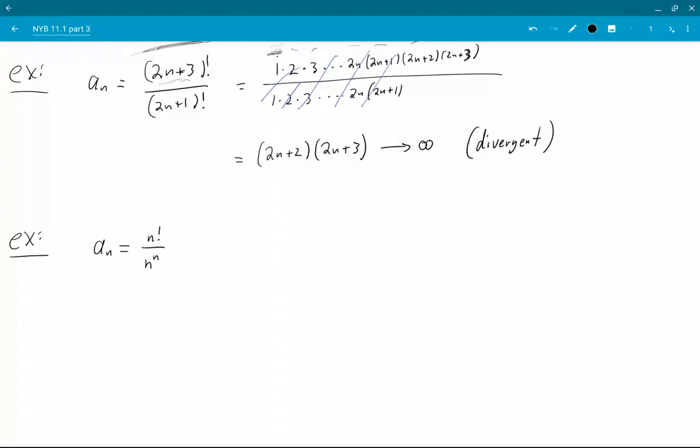Okay, so this one, I'm going to expand it again to get a sense of what's happening. So on top I have 1 times 2 times 3 times, dot dot dot, all the way up to n minus 1, and then n. On the bottom, I just have n times n times n, and the exact same number of factors on top as I have on the bottom.